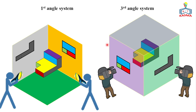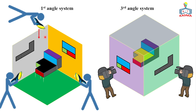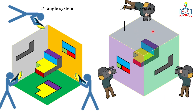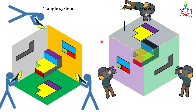For the top view in the first angle projection, you emit light from the top, and the layout of the object is traced onto the horizontal plane — this is the top view. Projecting gives two surfaces. These two views are also the same as in the third angle projection; the only difference is the position of the plane relative to the observer. We get three principal views: front, side, and top.